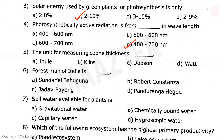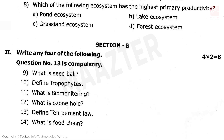Fifth question: the unit for measuring ozone thickness — the answer is option C: Dobson. Sixth question about the forest of India — correct answer option C. Seventh question answer: capillary water. Eighth question: which of the following ecosystem has the highest primary productivity? The correct answer is option D: forest ecosystem.